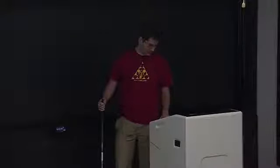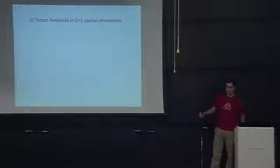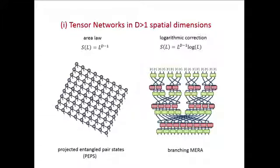Let's start with tensor networks in more than one spatial dimension. I want to cover two aspects briefly: what happens with the area law in higher dimensions and how to have tensor networks compatible with this area law. I also want to go beyond the area law and account for the logarithmic correction that we see in some ground states in two and higher dimensional systems.